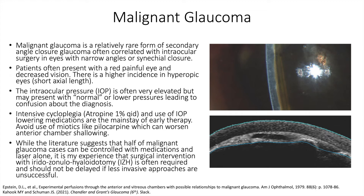Medical management includes intensive cycloplegia. We use atropine 1% QID and use of IOP-lowering medications as the mainstay of early therapy. Avoid use of miotics like pilocarpine, which can worsen anterior chamber shallowing. Laser peripheral iridotomy should be completed when possible and may help distinguish the clinical picture from a primary angle closure process. The chamber often deepens in the setting of primary angle closure but does not with malignant glaucoma unless the vitreous face is also disrupted by focusing laser energy through the lens zonules and onto the anterior vitreous face.